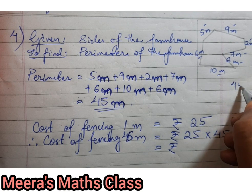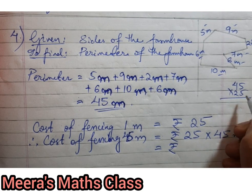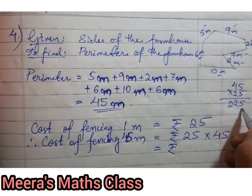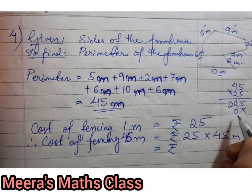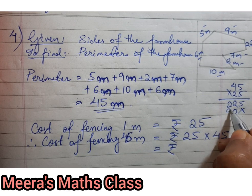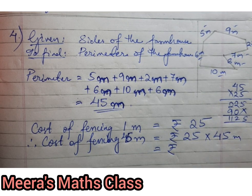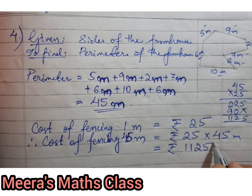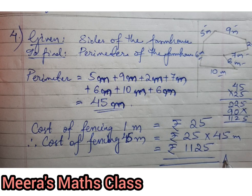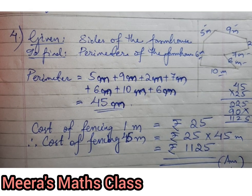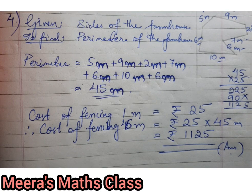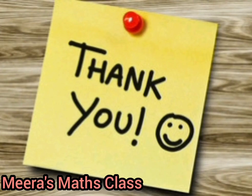45 into 25: 5 fives are 25, 5 fours are 20, then 22. Then 2 fives are 10, 0, 1. 2 fours are 8 plus 1 is 9, 5, 2, 11. Okay, so it is one thousand one hundred and twenty-five rupees. This is your answer. So this will be the cost. Okay, I hope you all understood this too. Thank you, children.